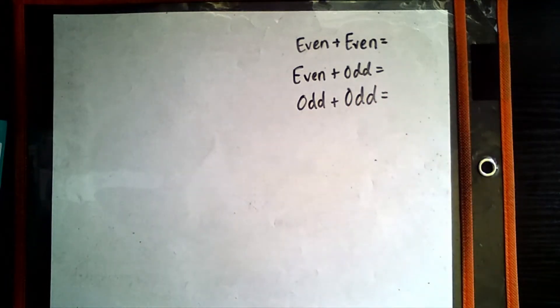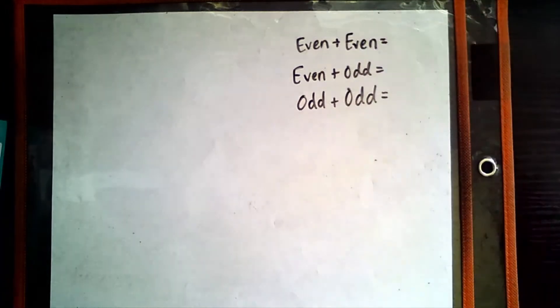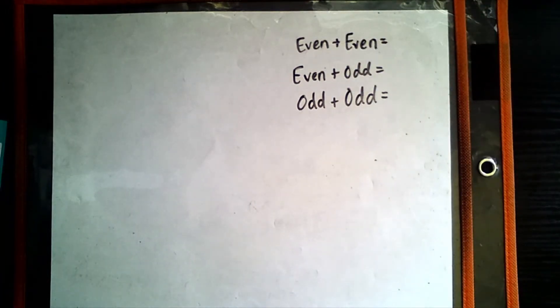Let's go ahead and begin by taking a look at what I've written down on our board here. You'll notice that I have three word equations explaining how even and even numbers might combine together, how even and odd numbers might combine together, and then lastly, how odd and odd numbers might combine together. We've been exploring even and odd numbers lately in the last few lessons. And now we're going to get a chance to see how they look together and what kind of patterns emerge or come out when we combine them together.